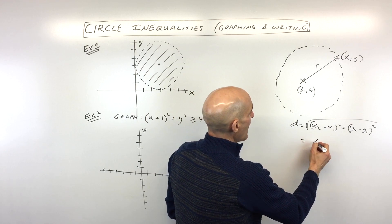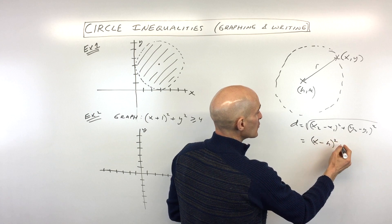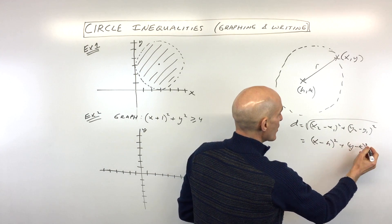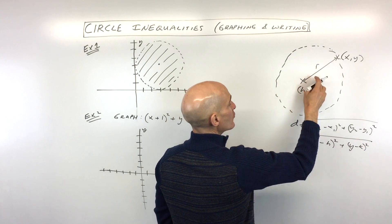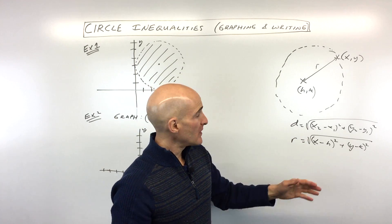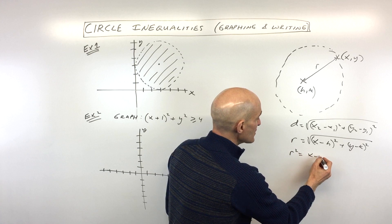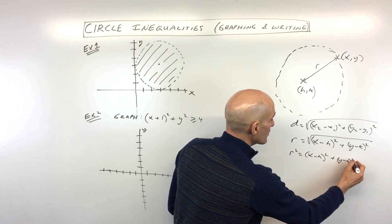So here we have x minus h, so we're subtracting the x coordinates squaring, y minus k, so we're subtracting those and we're squaring, and then we're taking the square root, and that distance is equal to the radius, we're going to call that r. Now what we're going to do now is we're going to square both sides of this equation. So we get r squared equals x minus h squared plus y minus k squared, like that.